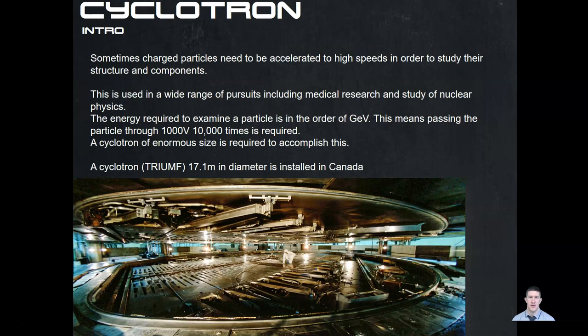Sometimes charged particles need to be accelerated to very high speeds in order to study their structure and components. This is used in a wide range of pursuits including medical research and nuclear physics. The energy needed to examine a particle is in the order of giga electron volts. If we use a 1,000-volt potential difference, the particle needs to pass through it around ten thousand times. Alternatively, you could pass through once but would need almost a million volts. So it's more practical to have a reasonable voltage source like 1,000 volts and pass the particle through many many times.